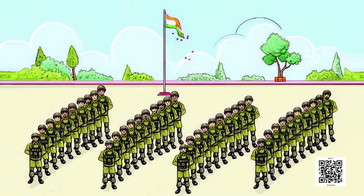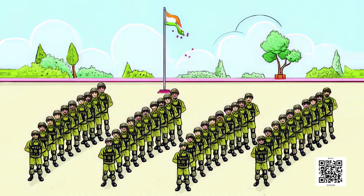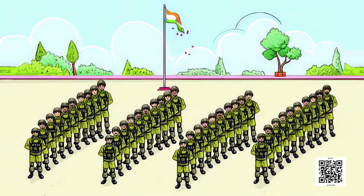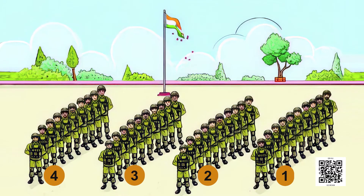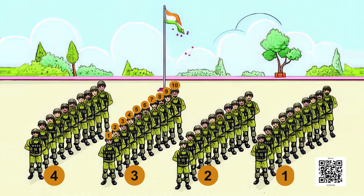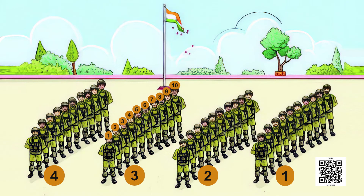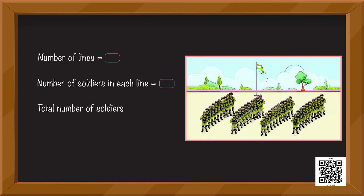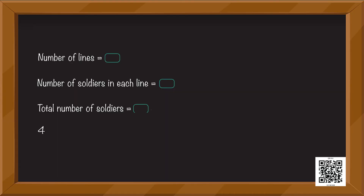This is a very beautiful picture. I can see so many soldiers standing perfectly in lines. Can you also see them? Soldiers are very important for our country because they protect our country. They are everywhere, always ready to help us. You should also respect whenever you see a soldier. Now let us do some grouping. The number of lines that you can see are — now count the number of soldiers in each line. That's correct. So total number of soldiers is equal to dash. We can say that four tens are forty.